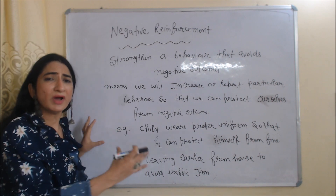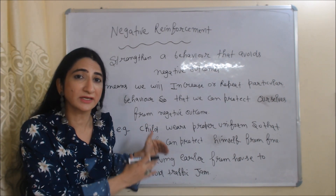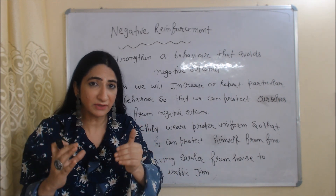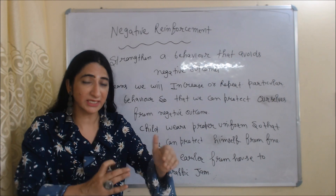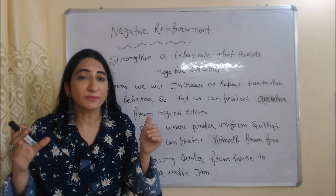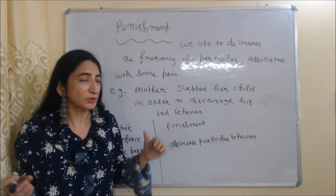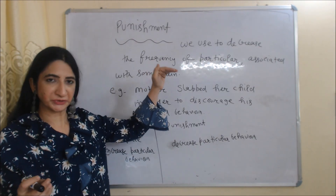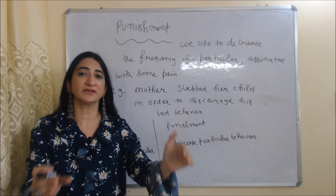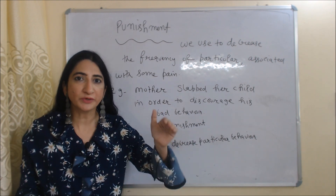So we can say that negative reinforcement means we increase or repeat a particular behavior so that we can protect ourselves from a negative outcome. Now we are going to talk about punishment. We use punishment to decrease the frequency of a particular behavior.